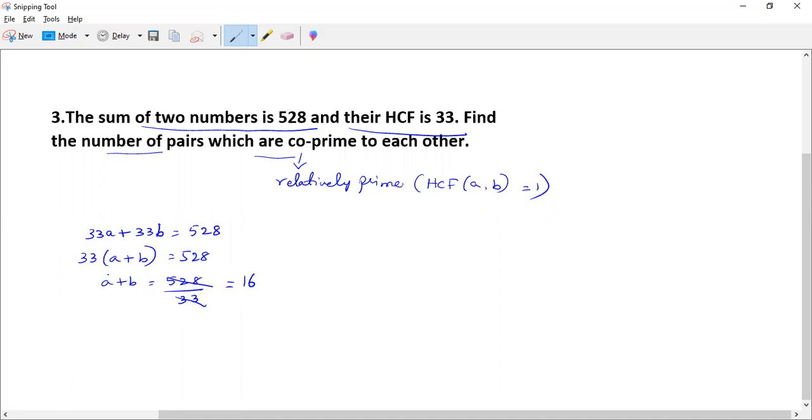According to the question, I have to find the pairs A comma B in which HCF of A comma B must be equal to 1, and A plus B equals 16. The first pair is 1 comma 15. One plus 15 is 16, and the HCF of 1 and 15 is 1.